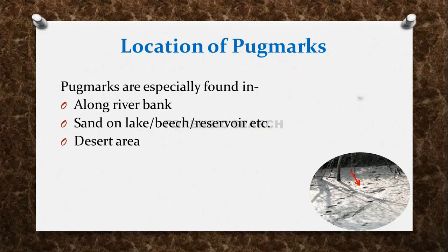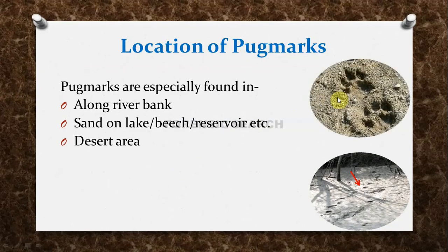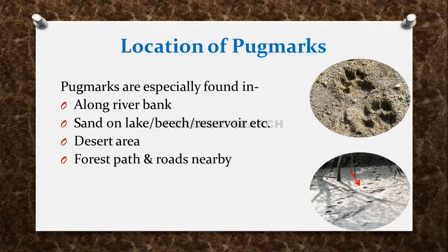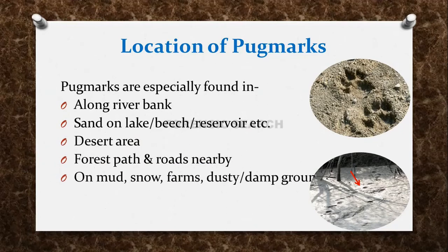The next location is desert areas — where there is sand, on top of that sand we can also find Pugmarks. Then, forest paths and roads nearby — since all wild animals are found in forests and jungles, along their regular paths we can find Pugmarks, and along the sides of forest roads we can also find them. Then, on mud, snow, farms, dusty or damp ground — we can also find Pugmarks on all these surfaces.